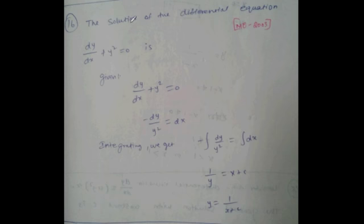The solution of dy/dx + y² = 0. Rearranging: -dy/y² = dx. Integrating both sides: 1/y = x + c. Therefore y = 1/(x + c). Very simple.